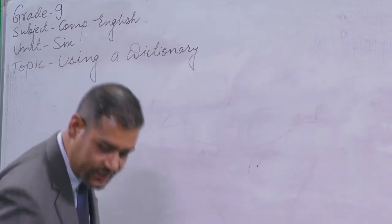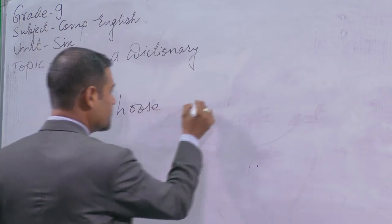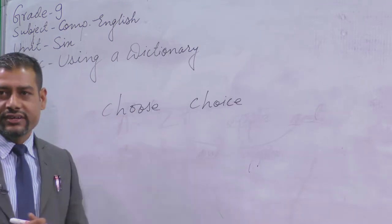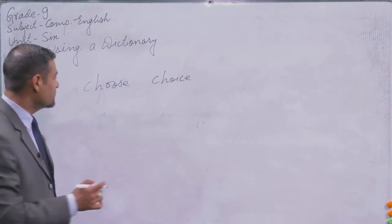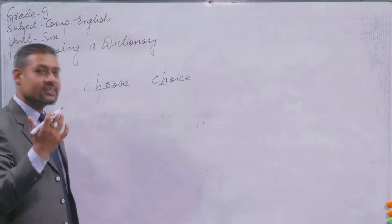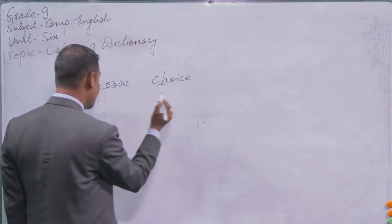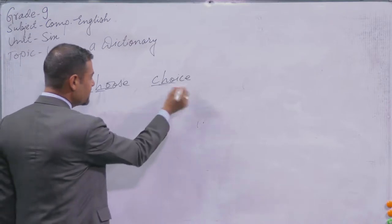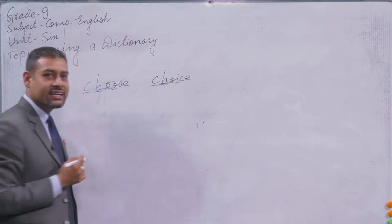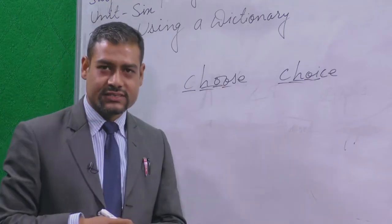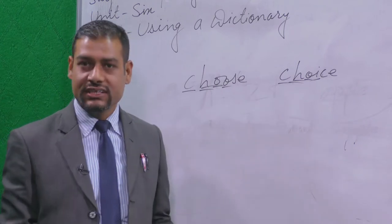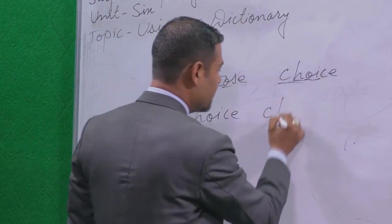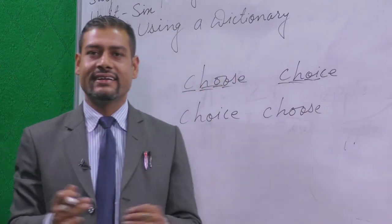Let me write down two more words: C-H-O-O-S-E (choose) and C-H-O-I-C-E (choice). Which word do we find first in the dictionary according to alphabetical order? You said 'choice.' Why? Because C, H, and O are the same in both words. The fourth letter is O in 'choose' and I in 'choice.' According to alphabetical order, I comes before O. That's why we find 'choice' first in the dictionary, and then 'choose.' This is how words are arranged in the dictionary.